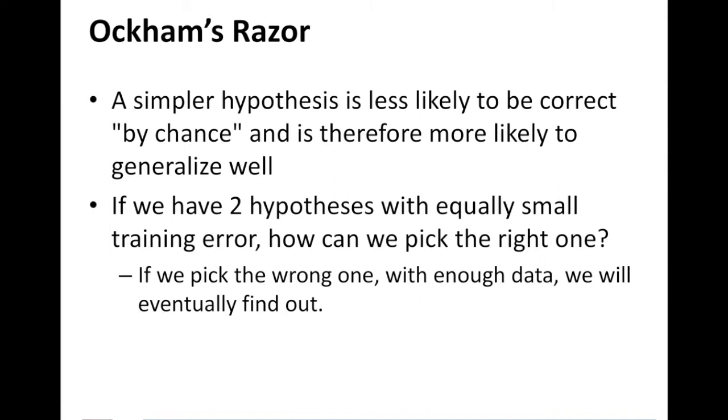A simpler hypothesis is less likely to be correct by chance and is therefore more likely to generalize well. So what does it mean by generalization? By generalization, we mean newer data instances that may become available in the future or are part of a separate test set. So how does your model generalize to those data instances? That is the main problem in machine learning. There's always data that is yet to become available that is part of a test set or that is held out for only evaluation purposes. So you want your model to perform well in that scenario and that's what you want to optimize for.